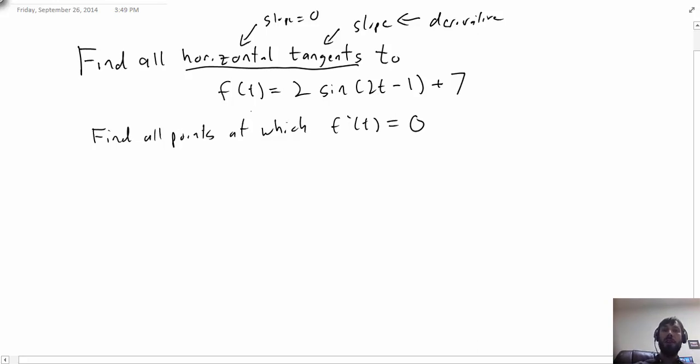You can differentiate a function that involves sine and some other composed function using the chain rule. So you define inner function u = 2t - 1 and then rewrite y as 2sin(u) + 7. Then the chain rule says that f'(t) would be dy/du times du/dt.